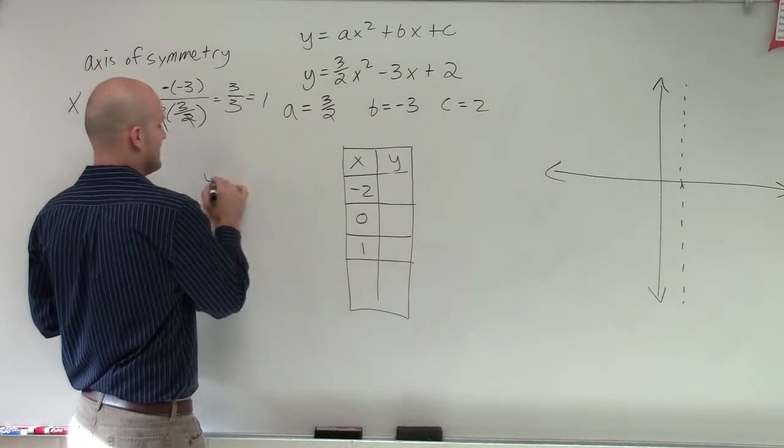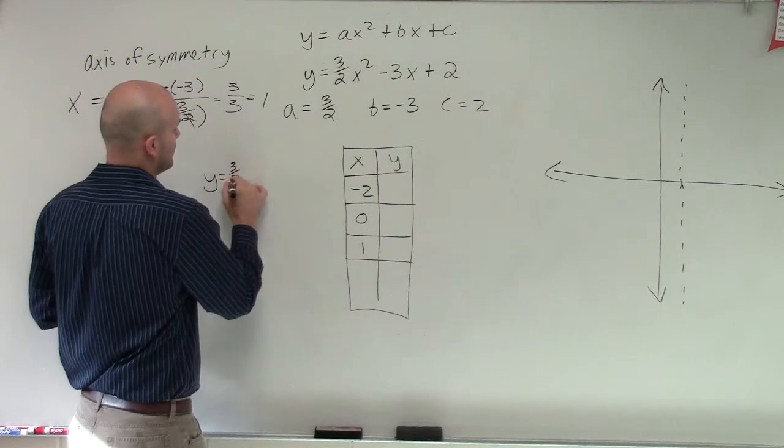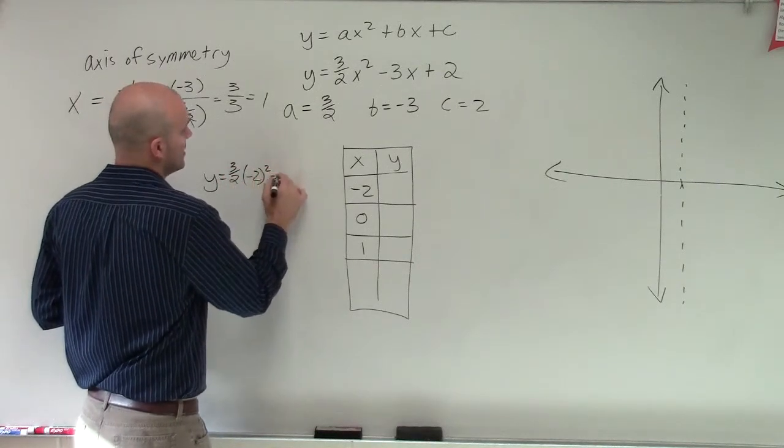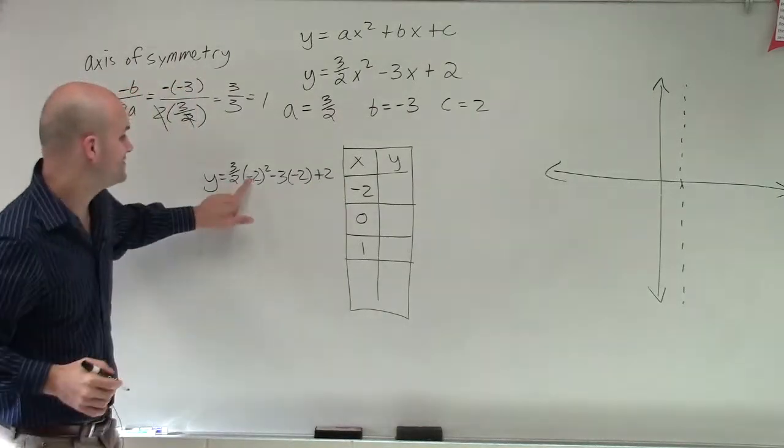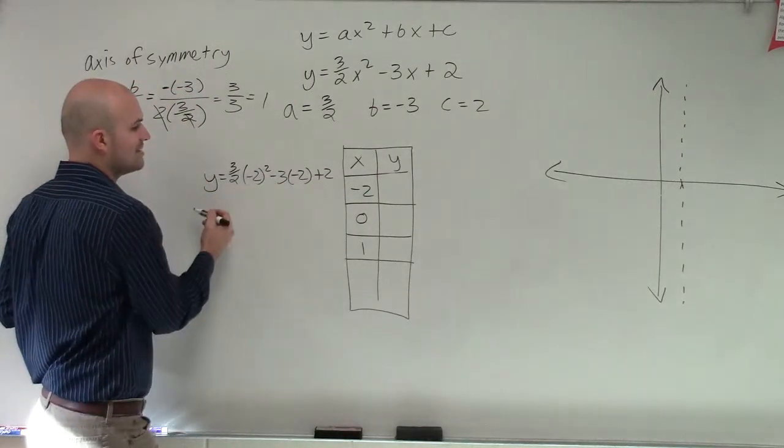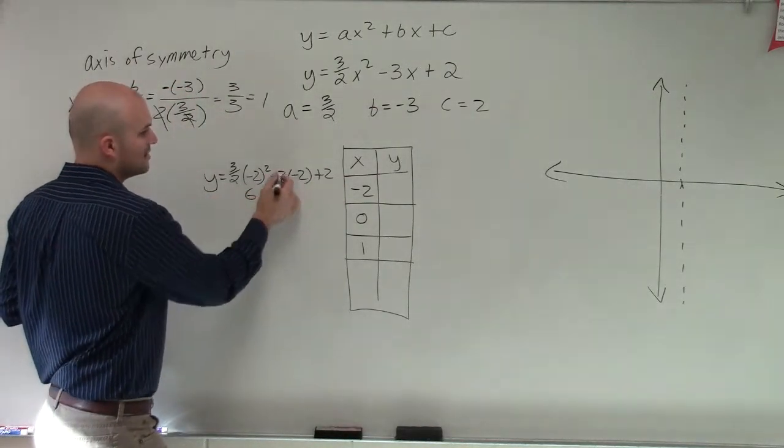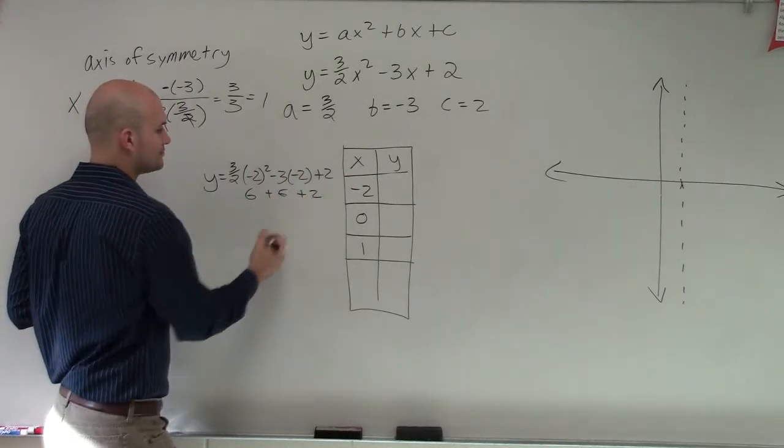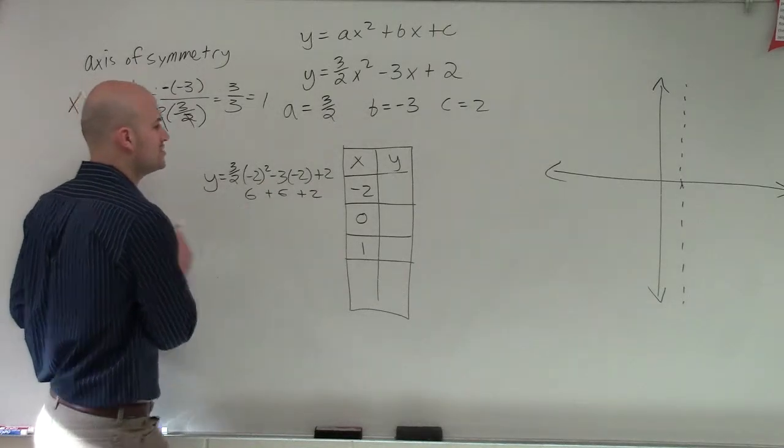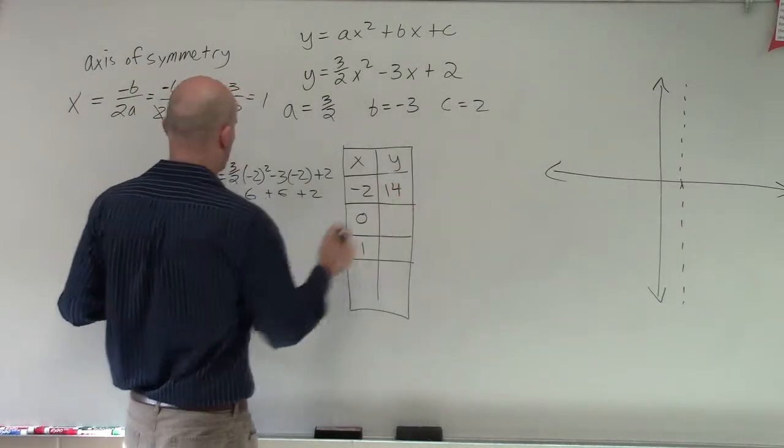All right. So let's go and plug in our points. So if I had y equals 3 halves times negative 2 squared minus 3 times negative 2 plus 2. So negative 2 squared is 4. 4 times 3 halves is going to be 6. Negative 3 times negative 2 is positive 6. And then plus 2.